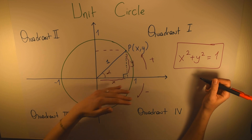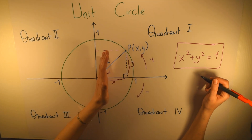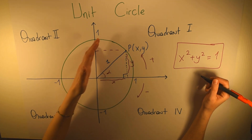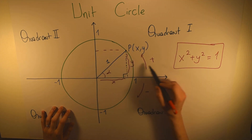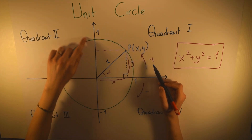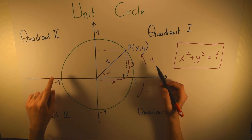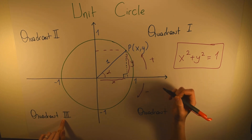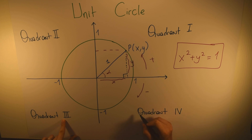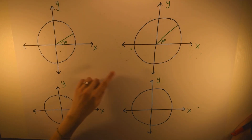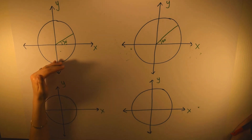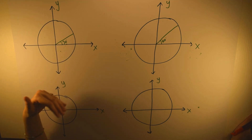The x and y axes divide the xy-plane into four quadrants. The upper-right part is called Quadrant 1, upper-left is Quadrant 2, lower-left is Quadrant 3, and lower-right is Quadrant 4. Now let's look at the unit circle and see how the lengths of x and y change when we change the angle.